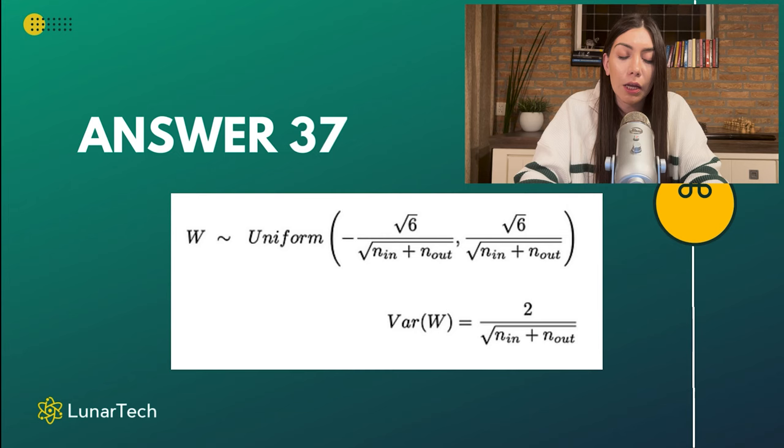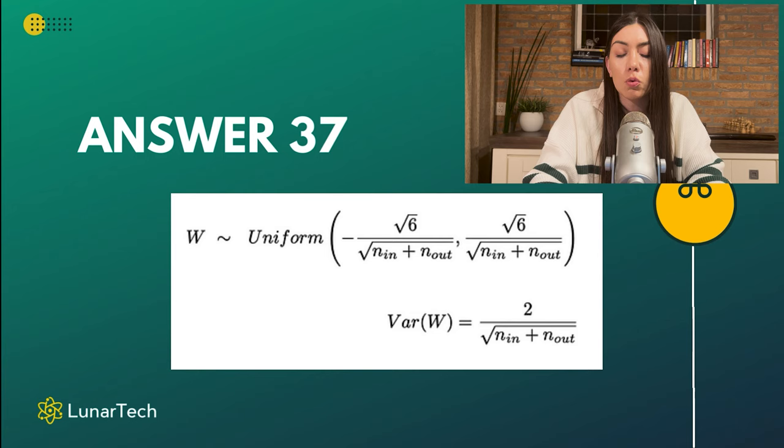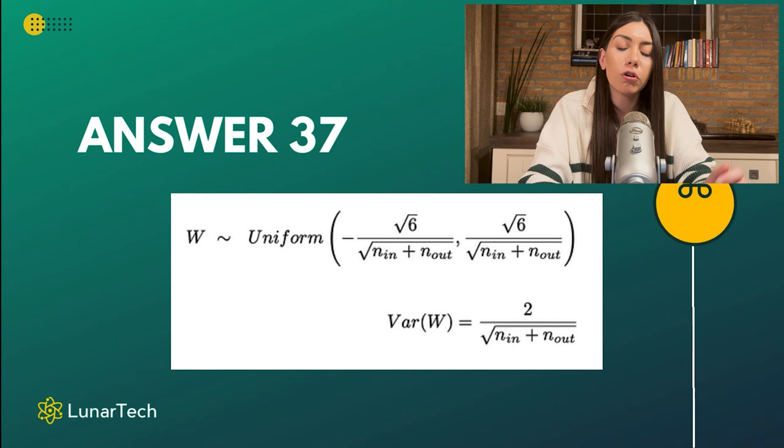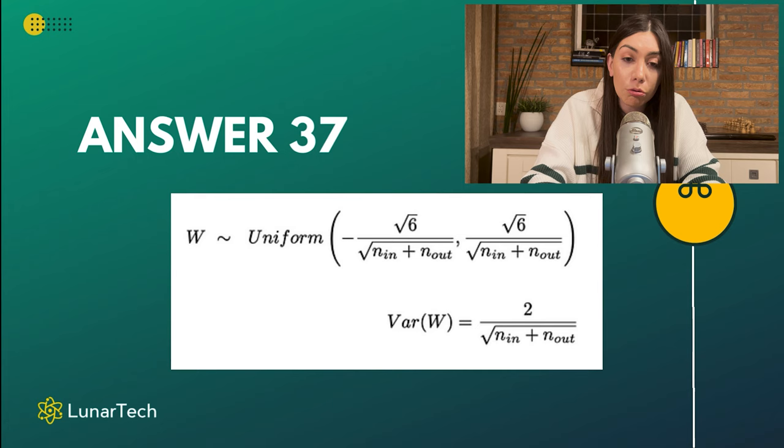In our case, we set the lower bound as negative sqrt(6) divided by sqrt(n_in + n_out), and the upper bound as positive sqrt(6) divided by sqrt(n_in + n_out). The variance corresponding to a random variable following this uniform distribution will then be equal to 2 divided by sqrt(n_in + n_out).